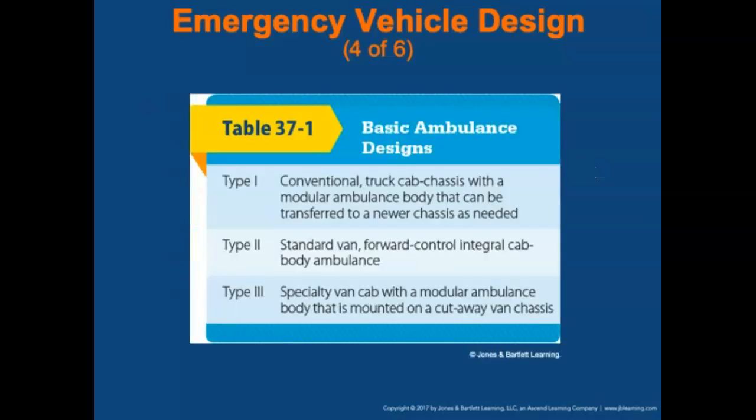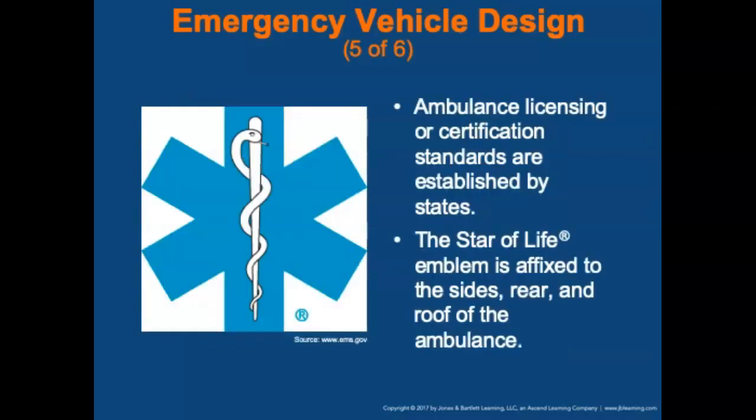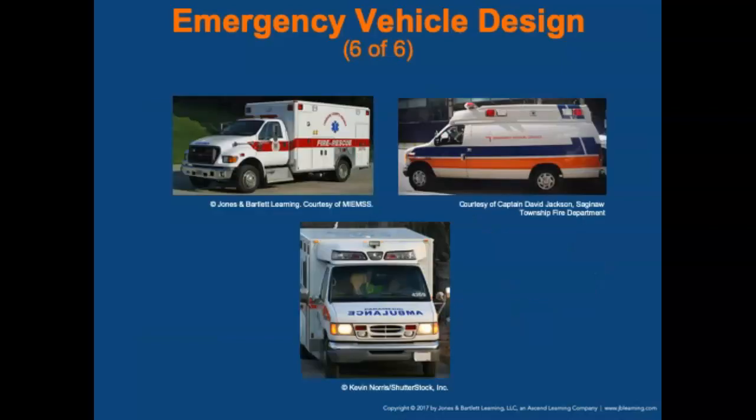There are three basic ambulance designs. Each state establishes its own standards for ambulance licensing and certification, and many states use federal specifications. The star of life emblem identifies vehicles as ambulances and is often affixed to the sides, rear, and roof of the ambulance. Local and state regulatory authorities determine which emblem may be displayed on the side of a pre-hospital care ambulance.